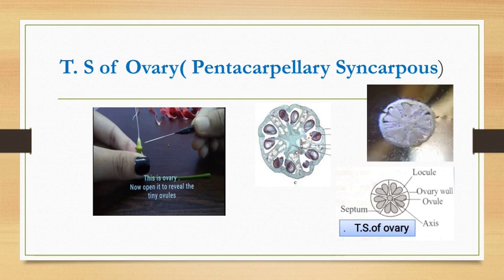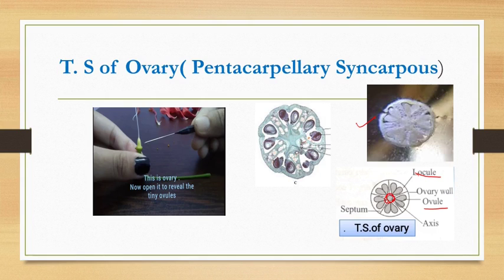You can see in the TS of ovary — if you take a cross section, this is the actual picture. I will show it in video part two of the same practical. Here you will see that there are five compartments called locules. In each locule, there are two ovules present. In the center, you can see axile placentation present in hibiscus pentacarpellary syncarpous ovary. TS of ovary is not expected from you, but you might have to draw this diagram and explain.